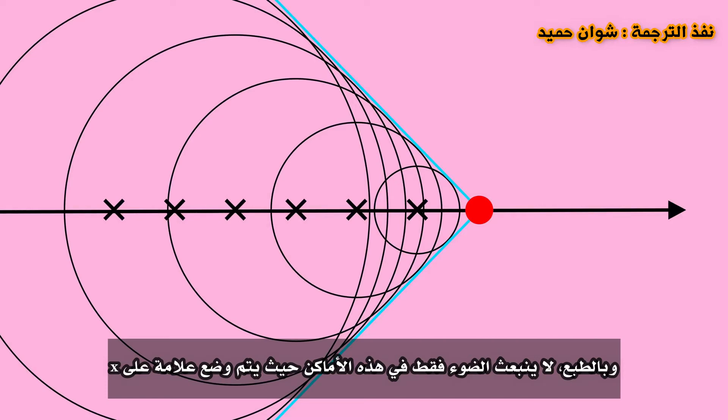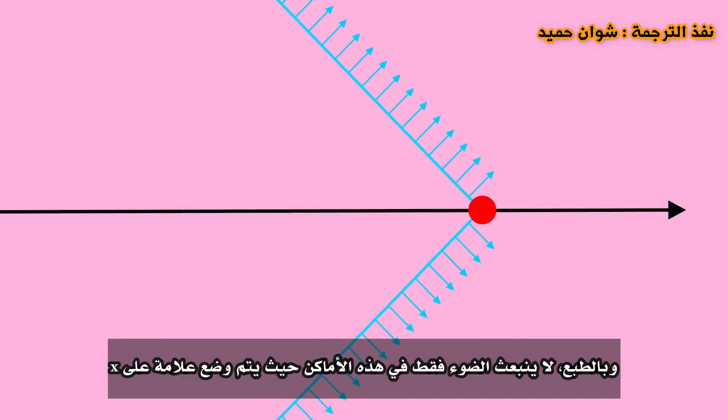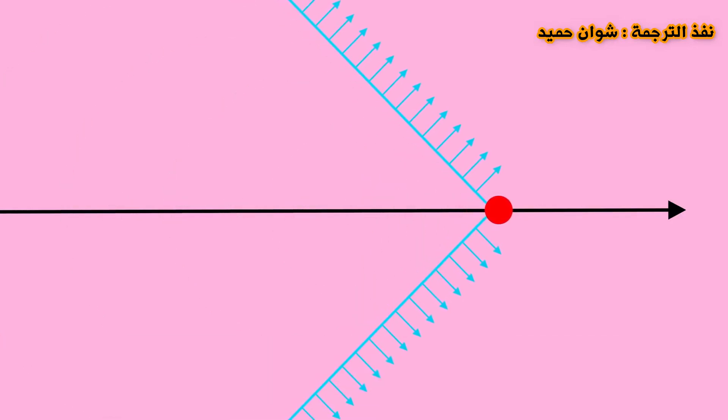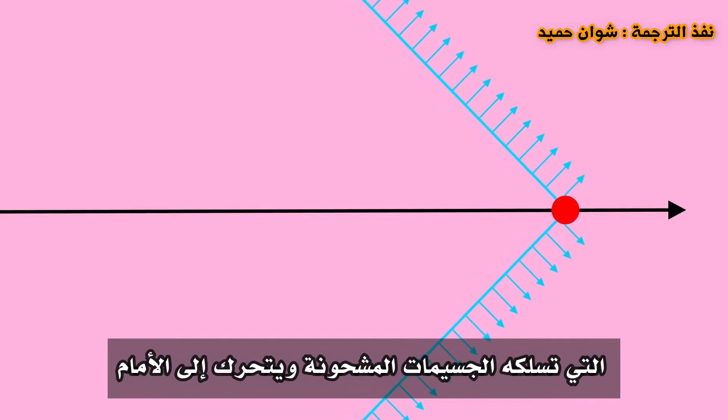And of course, light isn't emitted just at these locations where the x's are marked. The light is emitted everywhere along the path of the charged particle and the result is a cone of light growing around the path taken by the charged particle and traveling forward.